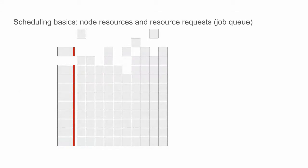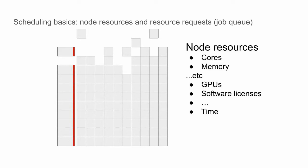Getting into scheduling basics — node resources and resource requests. Consider a single node: it has resources such as cores and memory, the main ones I'll focus on when talking about the shape of a job. Some nodes also have GPUs, some have limited software licenses that need to be monitored as resources, and so on. All of these resources are available across time.